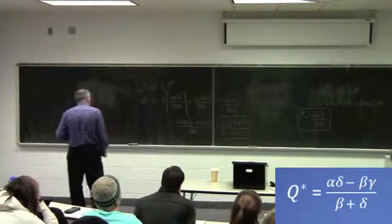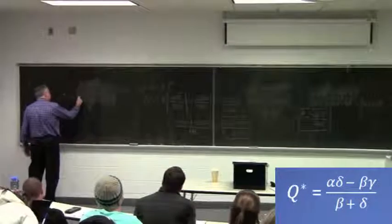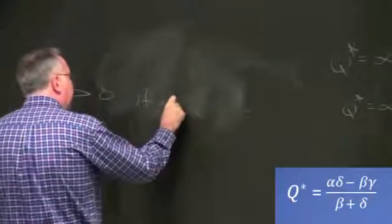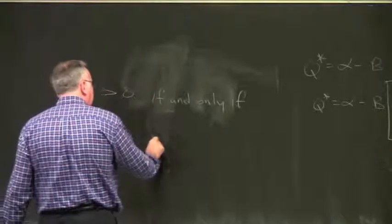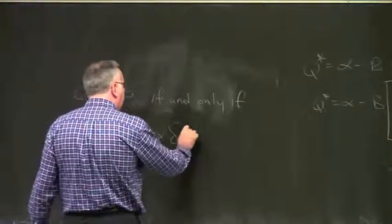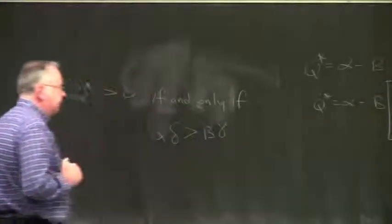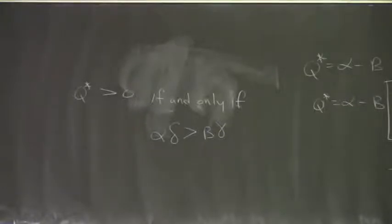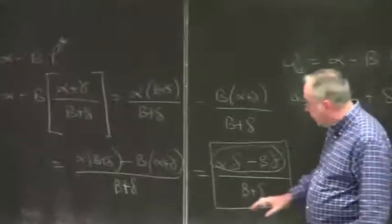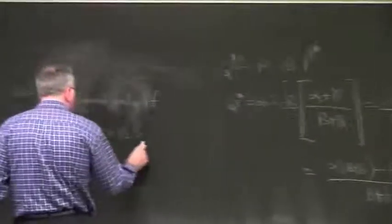So the conditions for q* to be positive: q* will be greater than zero if and only if alpha times delta is greater than beta times gamma. That would be the condition for q* to be positive. You need this numerator right here to be positive, because the denominator is positive. This numerator will be positive so long as alpha delta is greater than beta times gamma.